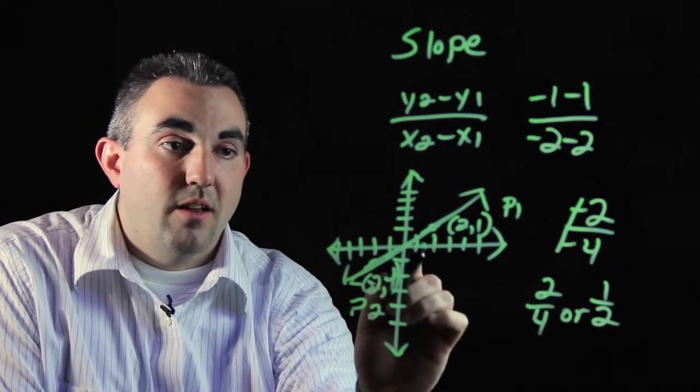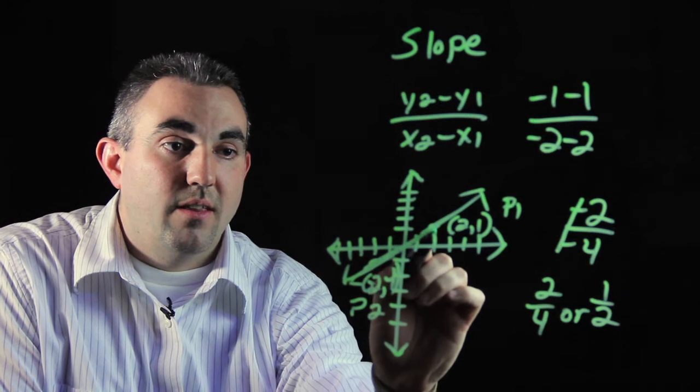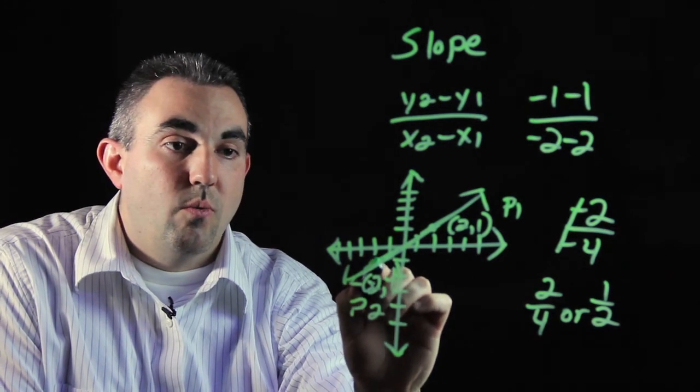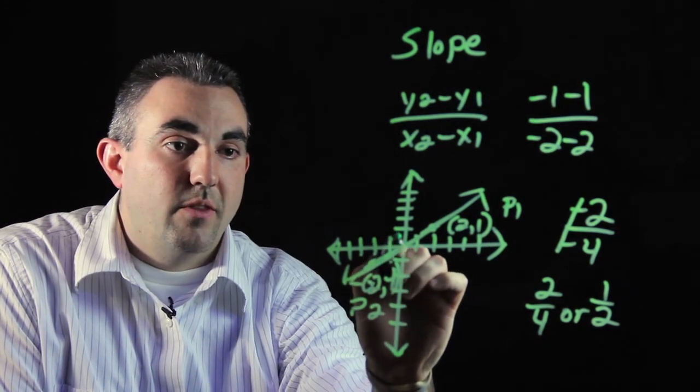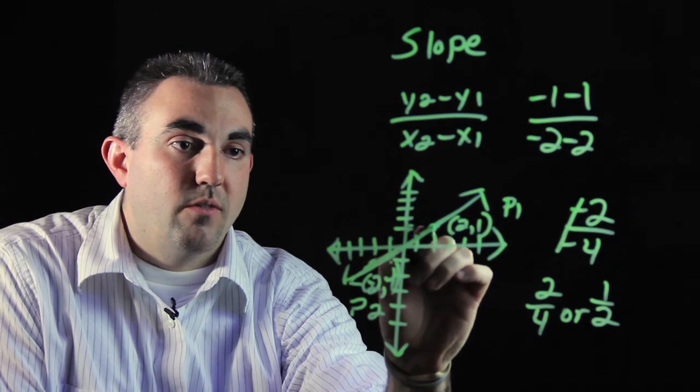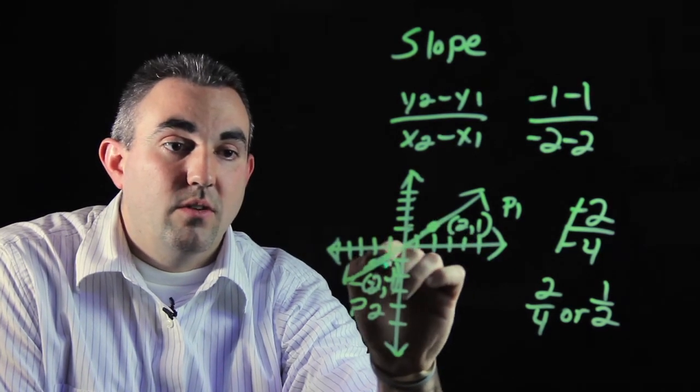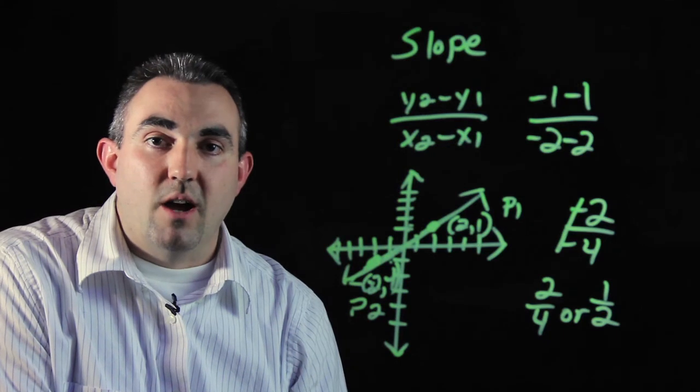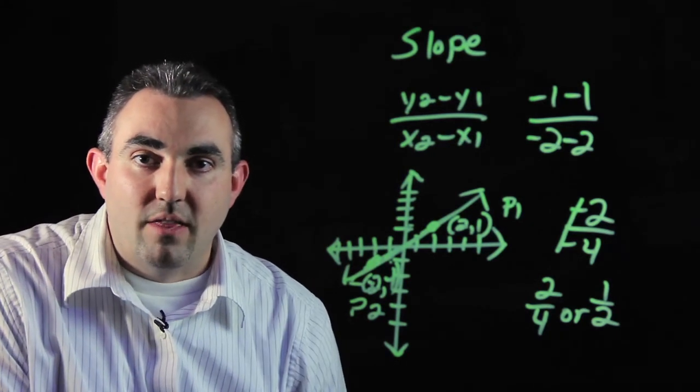Which means in order to get from this point to this point, you go 1 over, 2 up, 1 over, 2 up, 1 over. And you will eventually get to the other point that you are looking for. I'm Tom Ruiz, you do the math.